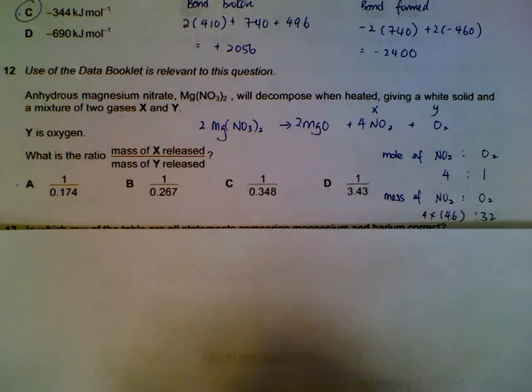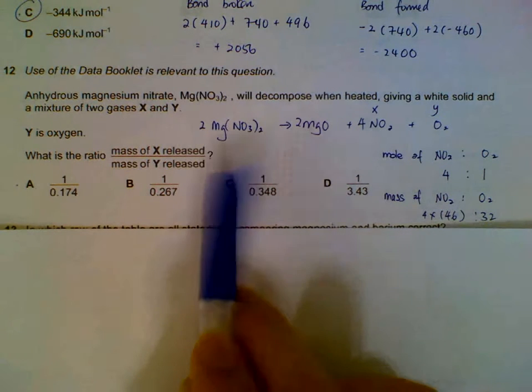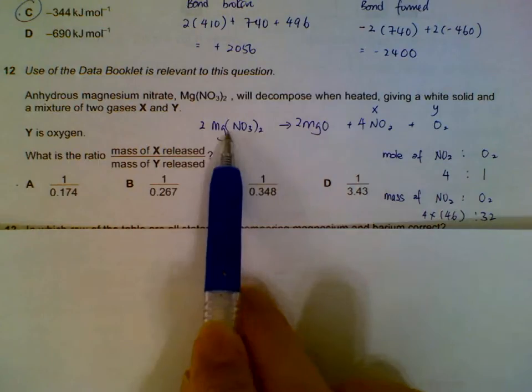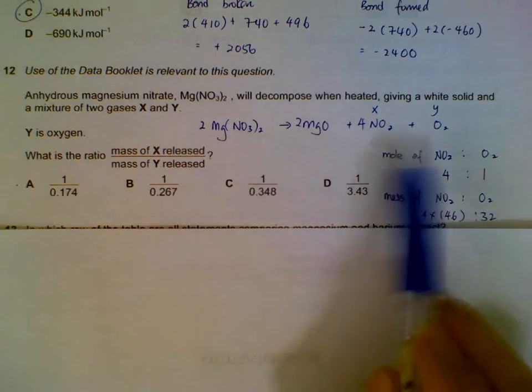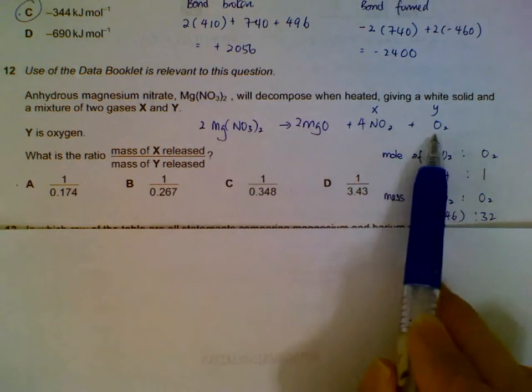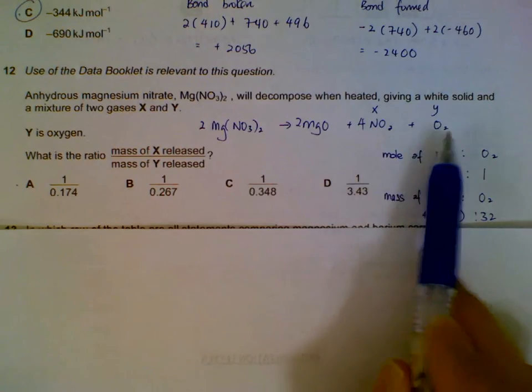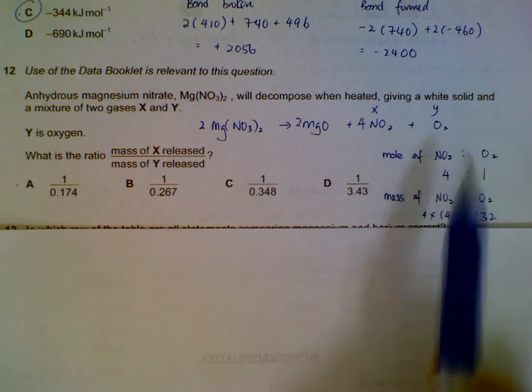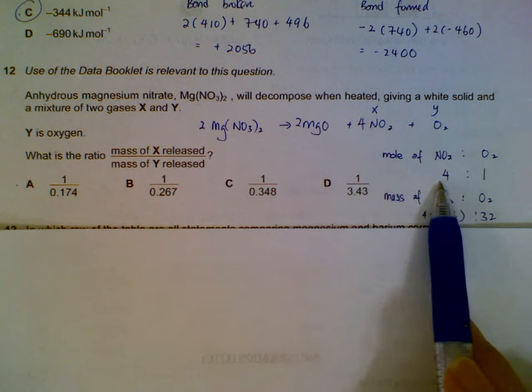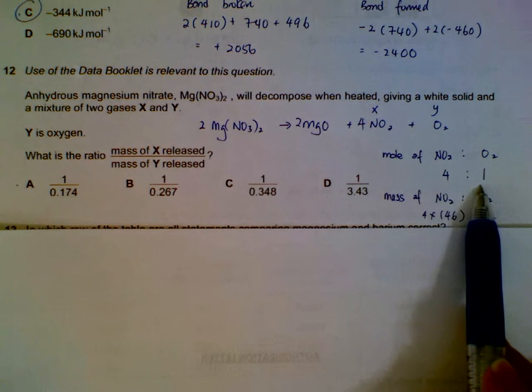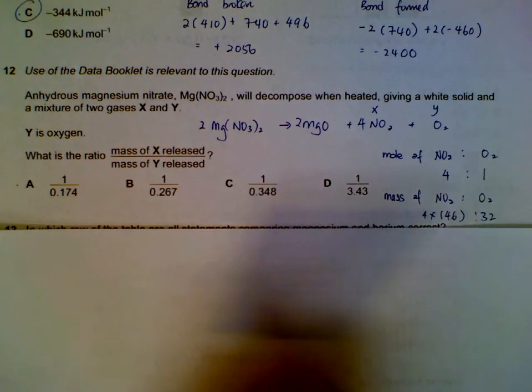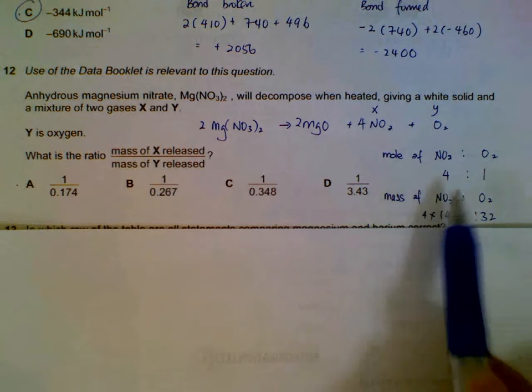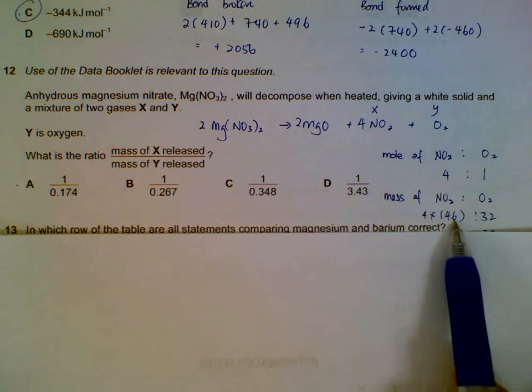Number twelve: magnesium nitrate decomposing. We write out the equation—we have nitrogen dioxide and oxygen, so X is nitrogen dioxide, Y is oxygen. Based on the ratio of moles, four moles will be produced with one mole of oxygen.